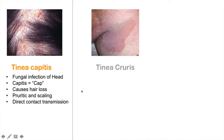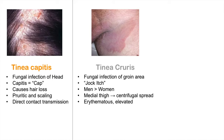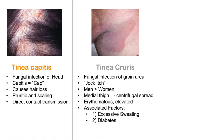The next presentation is tinea cruris, a fungal infection of the groin area, commonly known as jock itch. This affects men more than women. It generally begins on the medial thigh — the inner sides of the thighs — and spreads centrifugally outward. It is erythematous and elevated, becoming well-demarcated. Associated factors include excessive sweating, which is why it's called jock itch, as well as diabetes, obesity, and immunodeficiency — all of which can relate to getting recurrent tinea cruris.